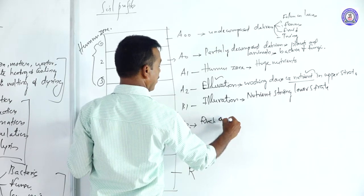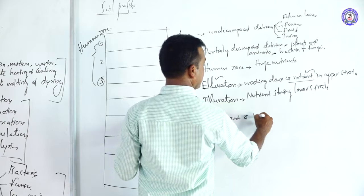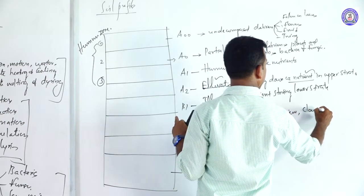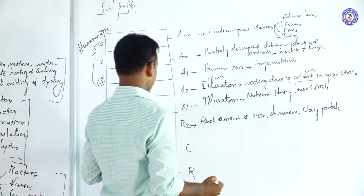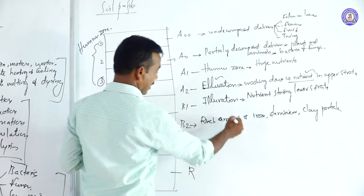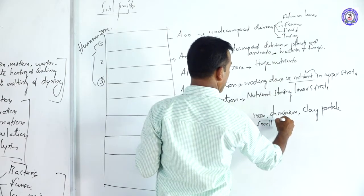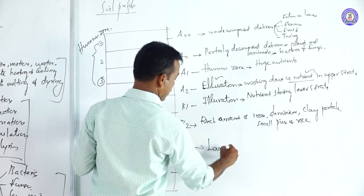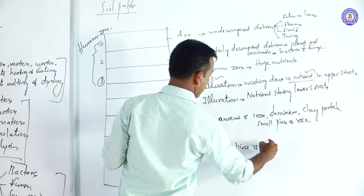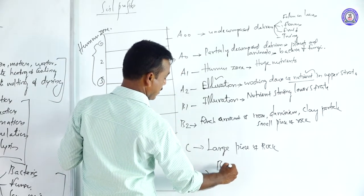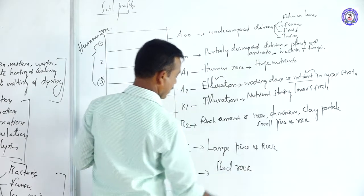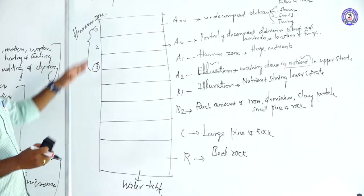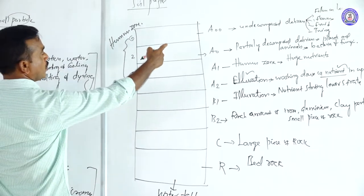B2 contains a rich amount of ions, aluminium, and clay particles. C is commonly called the parent material region, consisting of small pieces of rock. R is the bedrock region, consisting of large pieces of rock. Beyond the bedrock, water tables are present. These layers together constitute the soil profile.